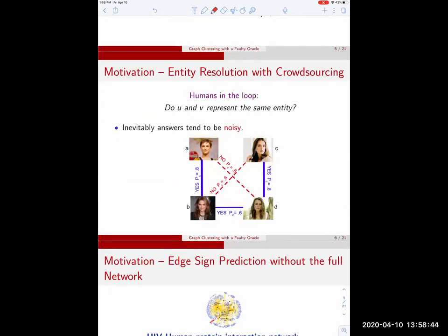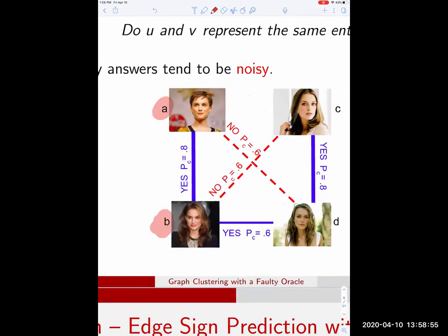What do I mean inevitably noisy? Suppose your database is images. On the left side you see Natalie Portman, on the right side you see Keira Knightley and because of the different haircut a worker may tell you that with probability 0.8 we get the right answer that a and b refer to the same person but with probability 0.2 we may get the wrong answer. Or between a and c, a and d, even if they're different people we may get the wrong answer with some probability.